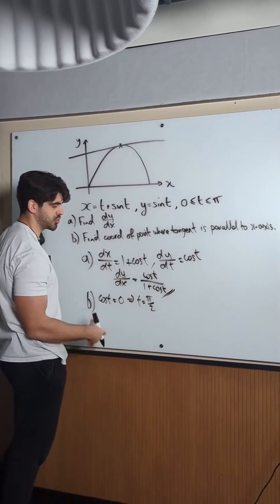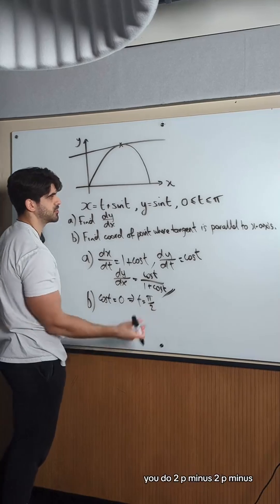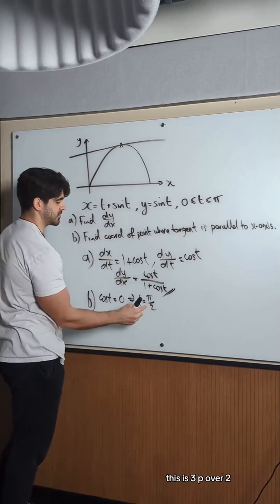To work out the secondary value for cos, you do 2pi minus. 2pi minus this is 3pi over 2, which is out of the range. So we're going to take this.